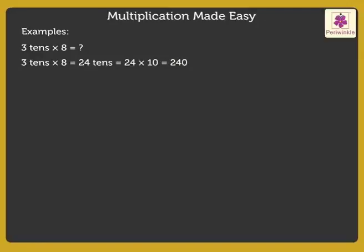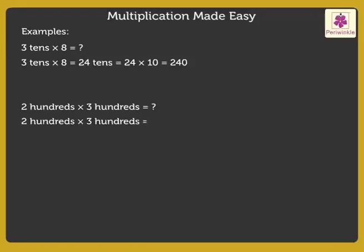Let us look at another example. Multiply two-hundred and three-hundred, which is equal to two-hundred into three-hundred. First, multiply the non-zero digits two and three. We get the answer six. Now, insert four zeros after six.